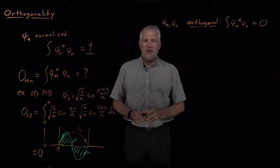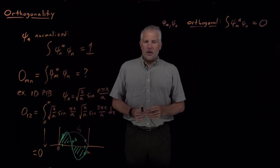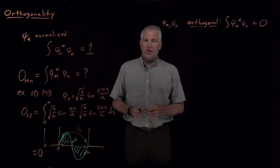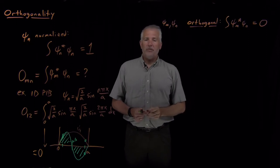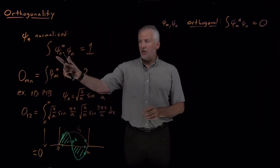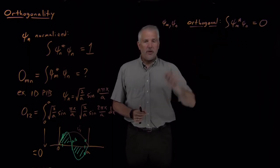Orthogonal means the same thing here as it does when talking about vectors. Two vectors in 3D space are orthogonal to one another as a way of saying they're perpendicular. The way you know if two vectors are orthogonal is you take their dot product, and if their dot product is zero, the vectors are orthogonal. So just like a dot product is a particular way of multiplying vectors together to see whether they're orthogonal, complex conjugating and integrating is a particular way of multiplying two wave functions together to find out whether they're orthogonal.